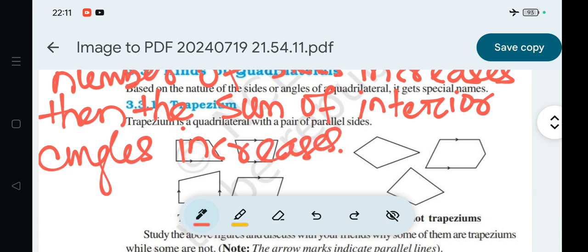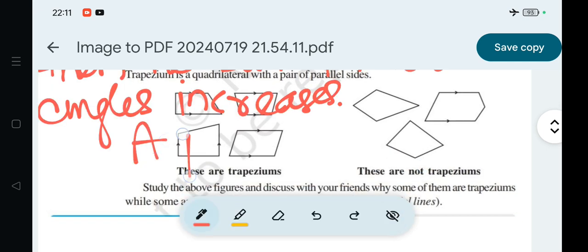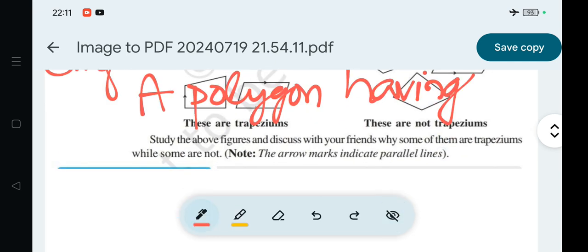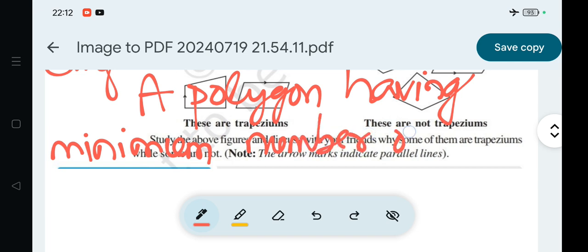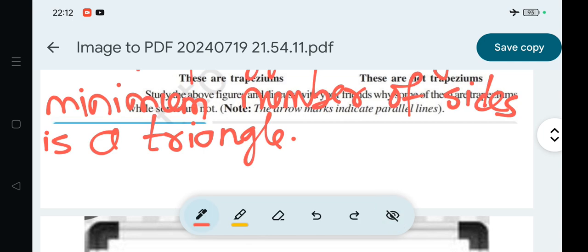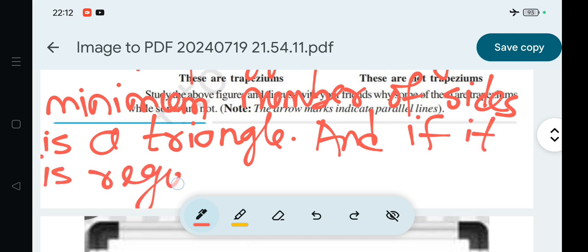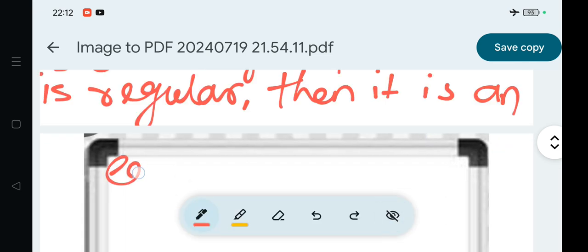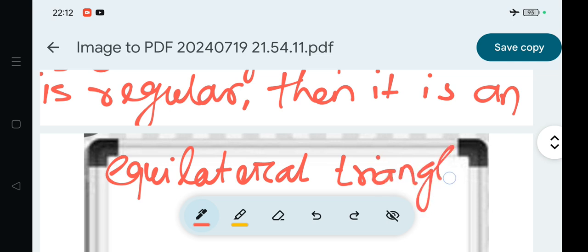A polygon having minimum number of sides is a triangle, and if it is regular, then it is an equilateral triangle.